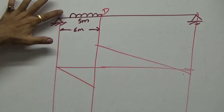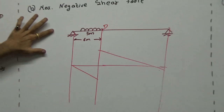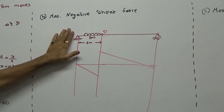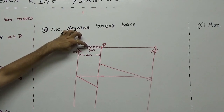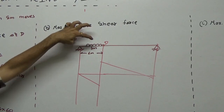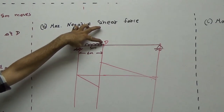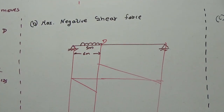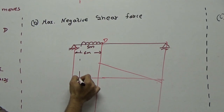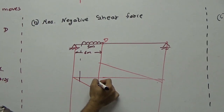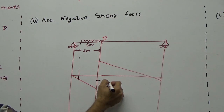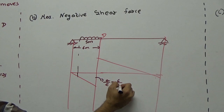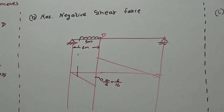Note: if the UDL length exceeds the negative region, only the portion that fits within that region is considered. The peak ordinate on the negative side is A/L = 6/16 = 0.375.